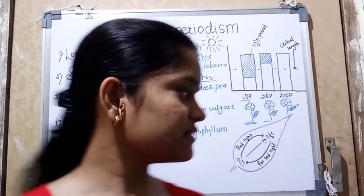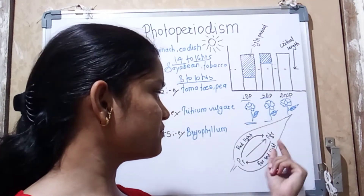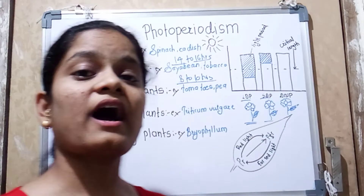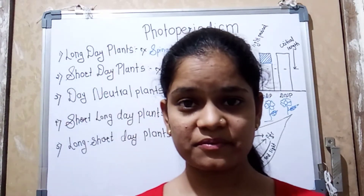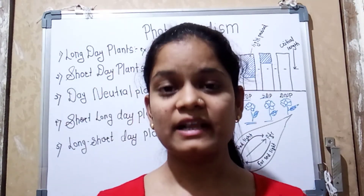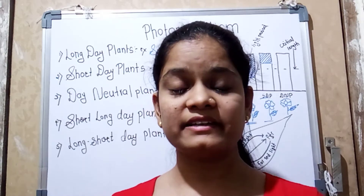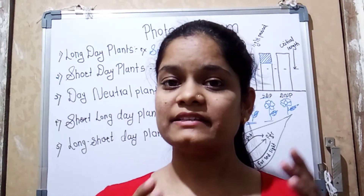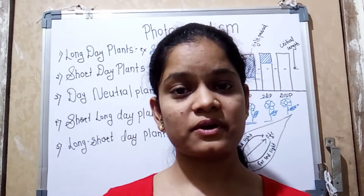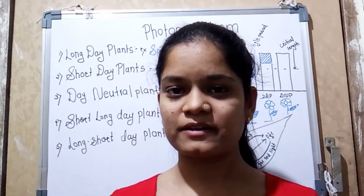We can see that the phytochrome has an active form called PFR. These proteins are responsible for the induced flowering of the plant. These proteins sense the length of day and night, which leads to the induction of flowering in short day plants and long day plants.